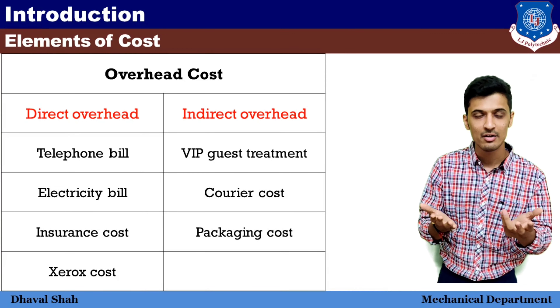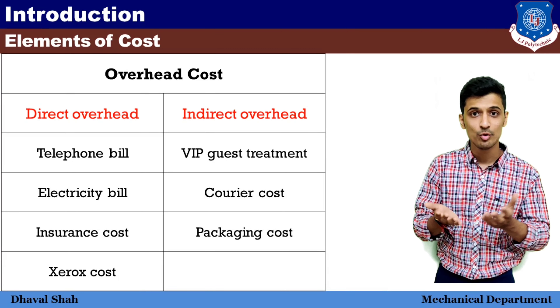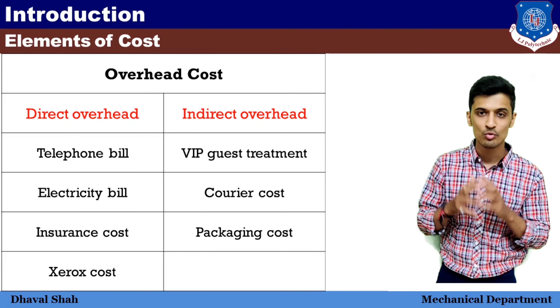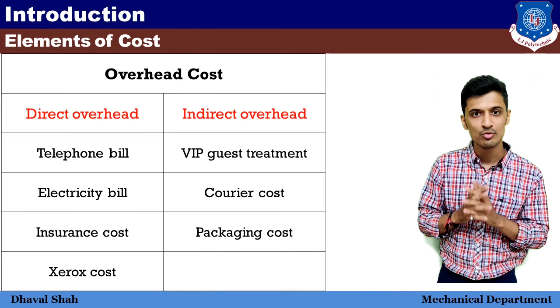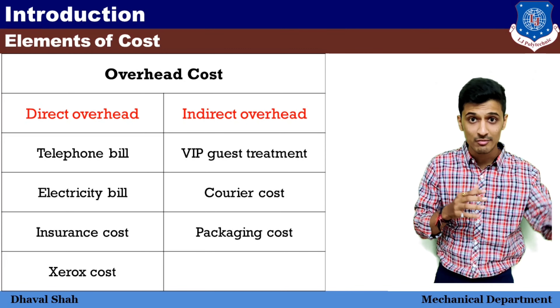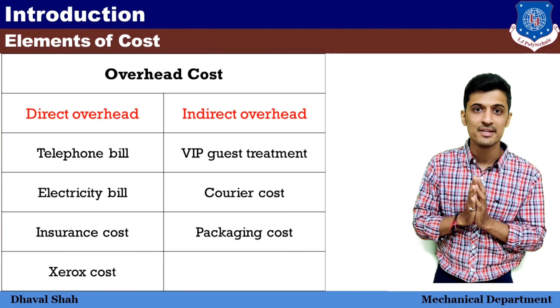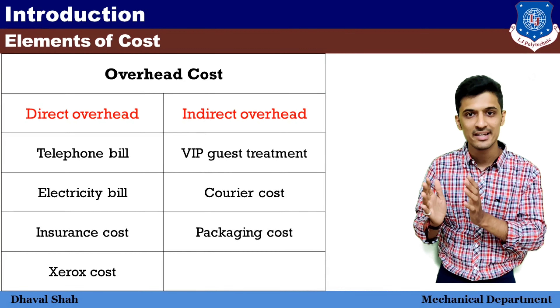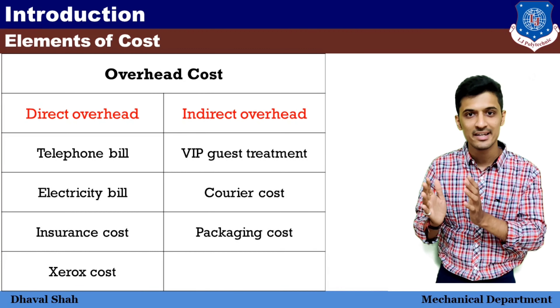Overhead mein — direct overhead mein kya aayega: telephone bill hai, electricity bill hai, insurance ka cost hai — woh sab direct overhead mein aayega. Indirect overhead mein kya aayega — for example, aapke yahan koi bhi customer aata hai, hume pata nahi ki woh India se hi aayega ya out of India se aayega. Agar out of India se koi customer aa raha hai toh uski khaatirdaari karenge — suppose koi hotel mein stay de raha hai, toh woh paisa bill ke form mein hotel waale ko pay karna padega. Toh woh jo expenses hain — that is overhead expense — woh indirect hai kyunki humne estimate nahi kiya tha ki hamare yahan koi customer bahar se aayega. These are the indirect expenses for overhead.